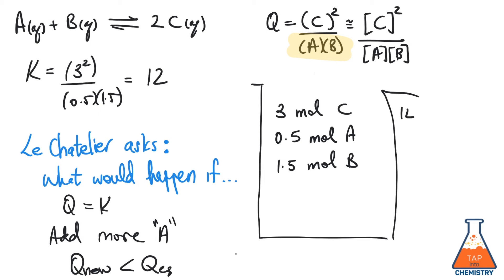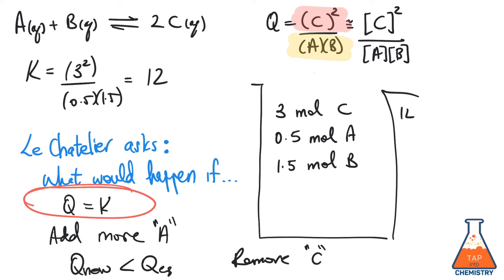We can do the same thing for what would happen if I were to remove some product C. If I were to remove product C, what I'm doing is decreasing the value of Q — making my new value of Q once again small. And if that's the case, more product will form and more reactant will be consumed as we go towards equilibrium. This is Le Chatelier's principle: at equilibrium, Q will always be equal to K, and so if I've done something to change the value of Q, then Q over time will change to get back to K.